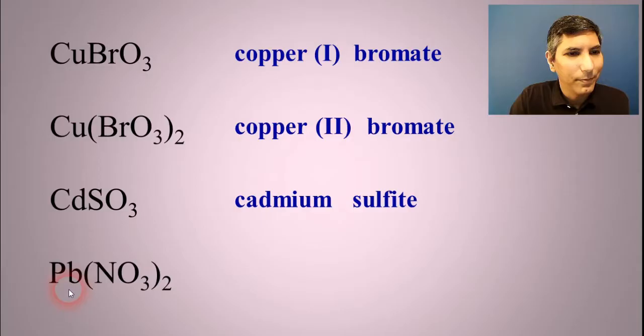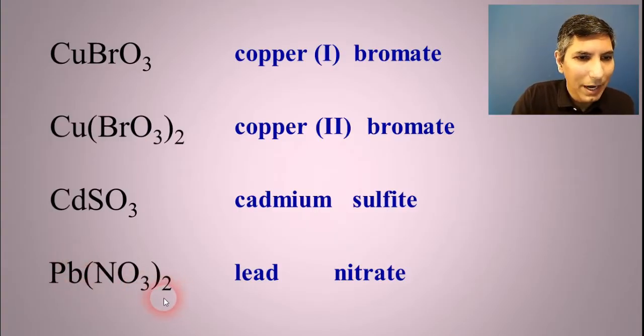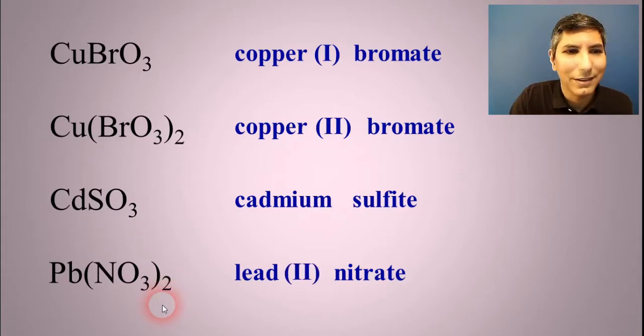How about this one? Pb is lead and NO3 is nitrate. Now lead is not a transition metal, is it? But it is one of those other exceptions. We have to put its Roman numeral on here. So we look at the charges. We see they've been swapped and that two right there tells us that this is lead(II) nitrate.